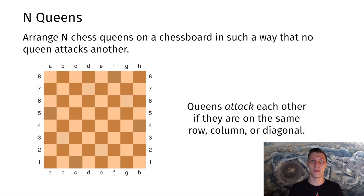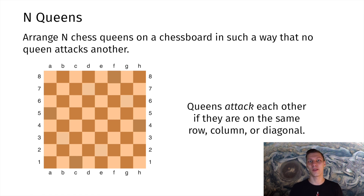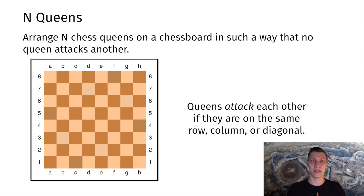Let's start with our problem definition. We start with an empty chessboard with dimensions n by n, and we need to place n queens on that chessboard in such a way that no queen attacks another. If you don't know chess, queens can attack each other if they are on the same diagonal, horizontal, or vertical. Here you can see an example of an empty chessboard, and here you can see an example of the solved problem.